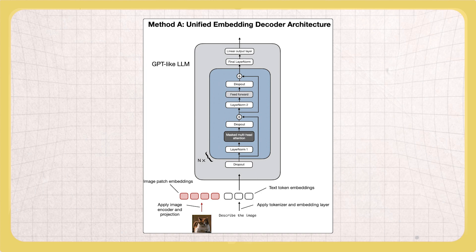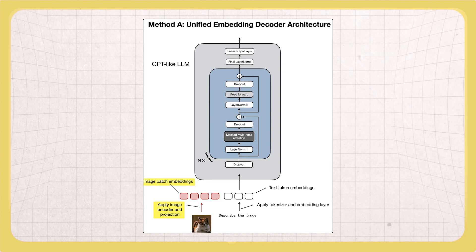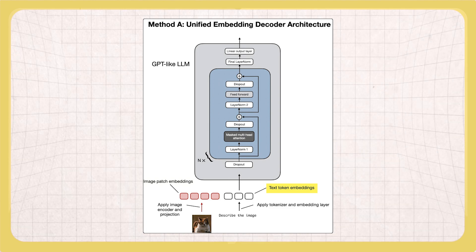So to the LLM, the embedded image patch basically looks like a text token that has been transformed to an embedding vector. In that sense, it's relatively simple. You just apply this image encoder to the patches and then concatenate it with the text. Then you just train your regular LLM. You don't even have to change the architecture at all — it's the same decoder architecture.